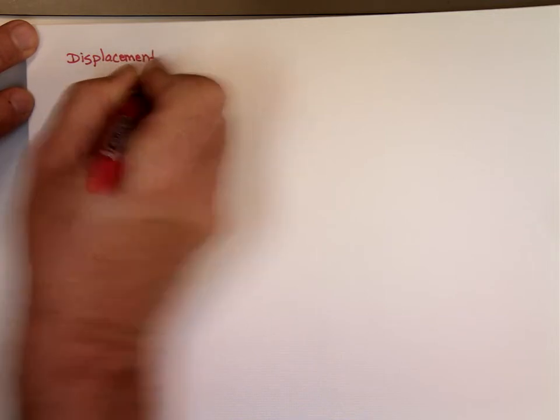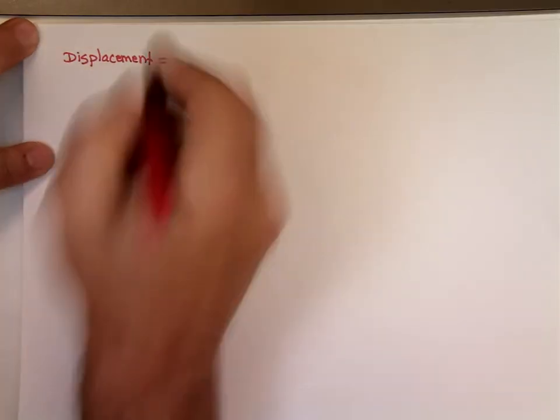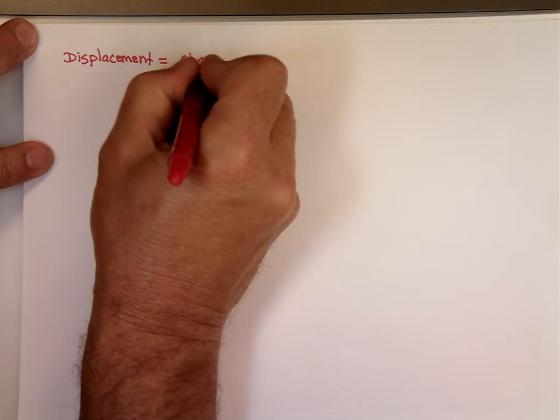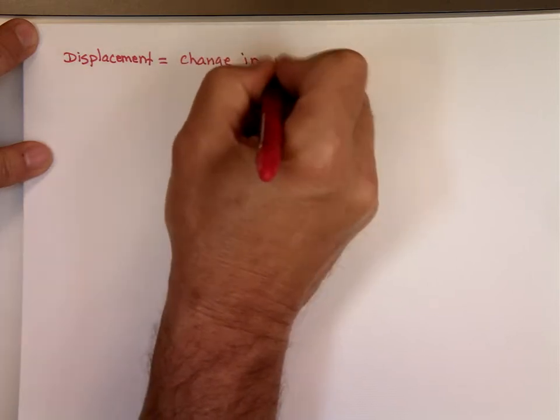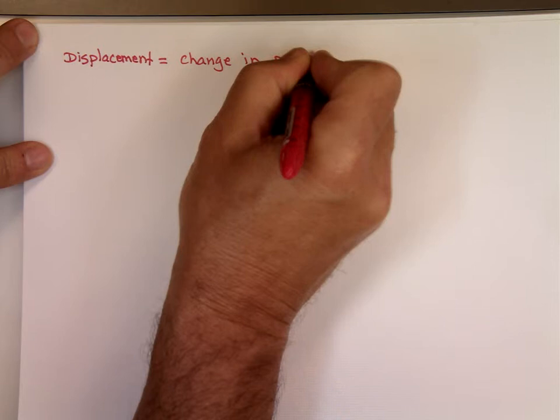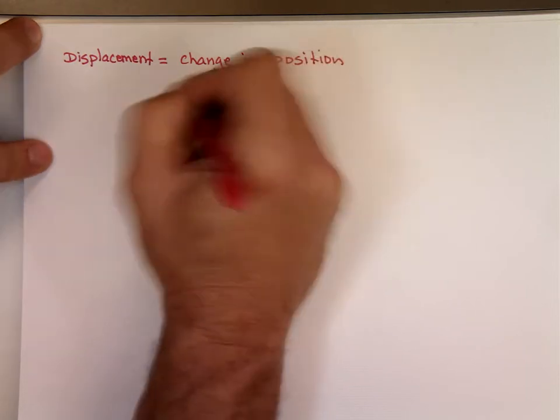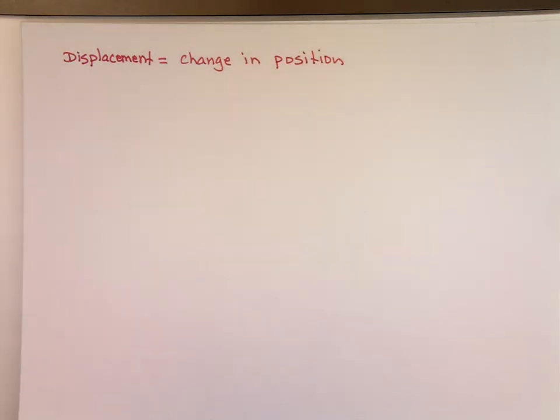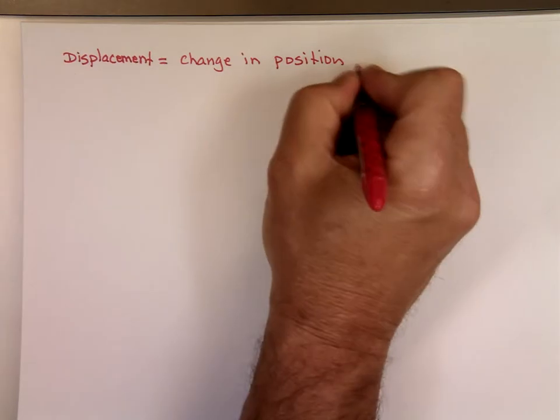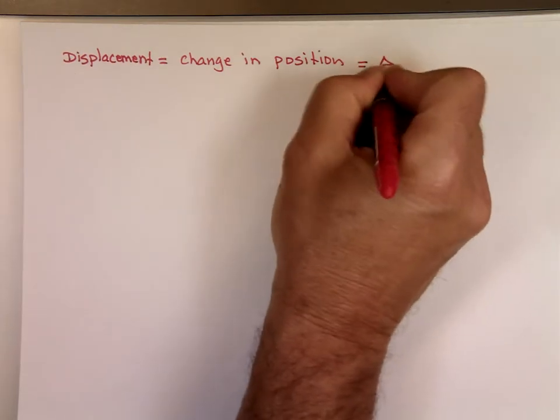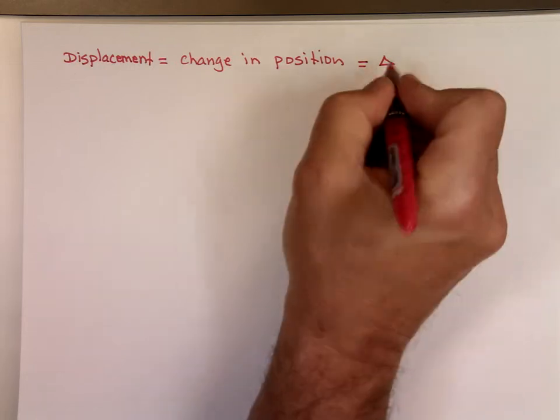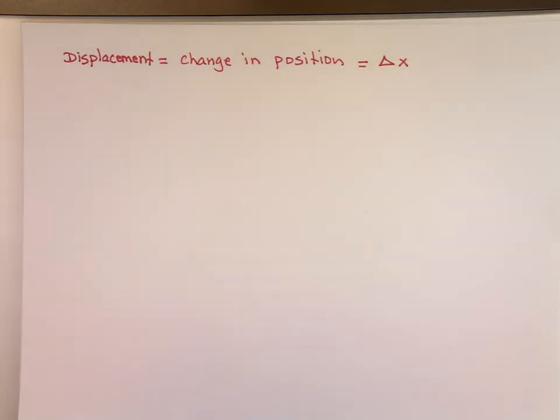Displacement equals change in position. Now, that change in, that's too much writing for us. So we use delta. Delta here means change. That little triangle called delta, delta x, which means what?